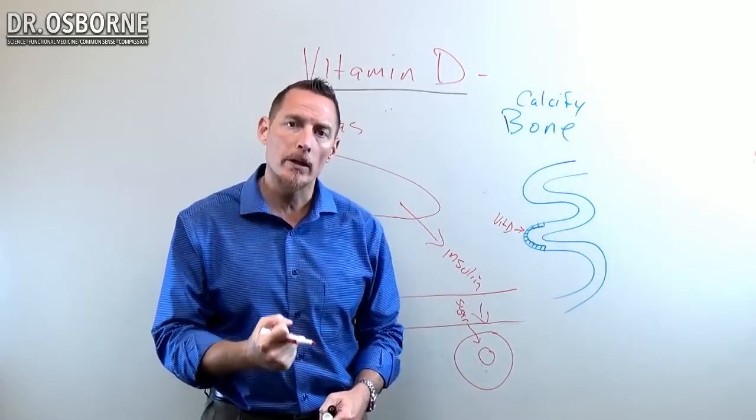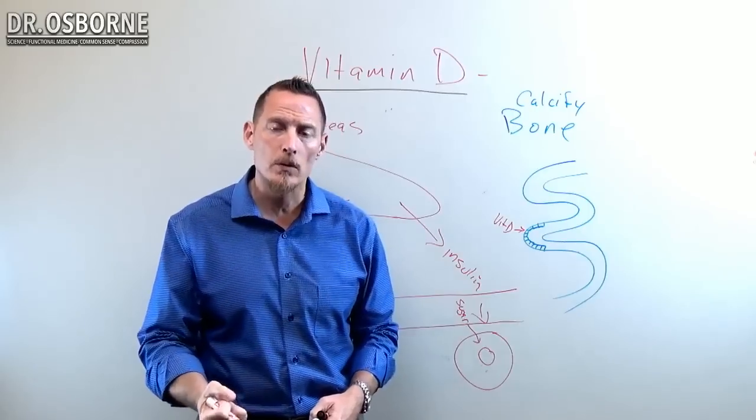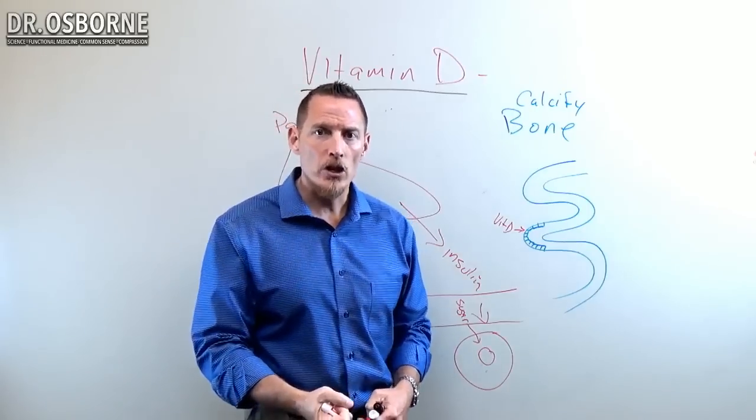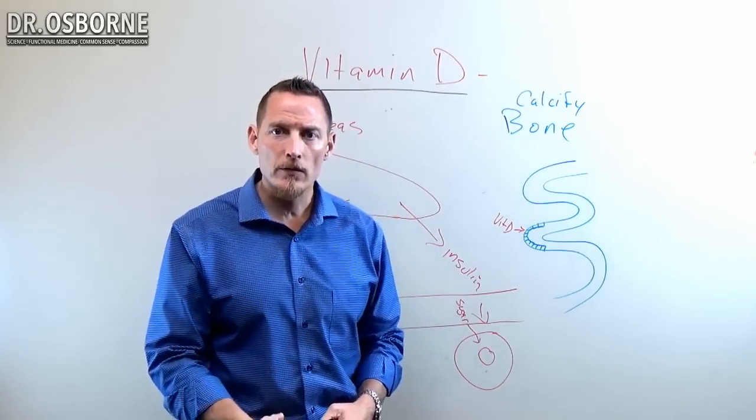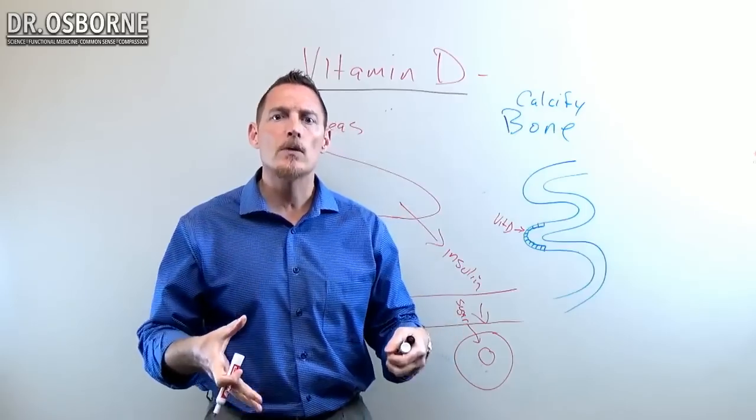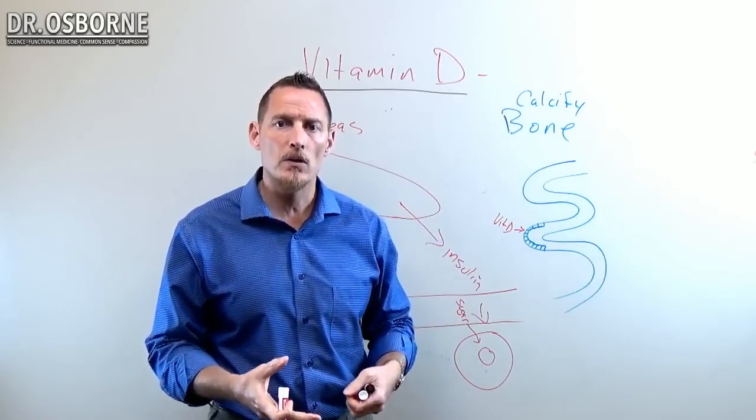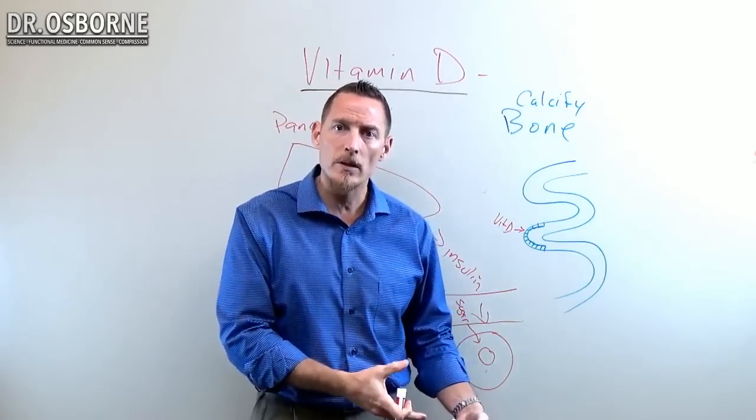This can create diseases like osteoporosis and rickets, which is a disease of children with vitamin D deficiency where their legs start to bow out. If you've ever seen somebody with bow legs, it's because as a child they had rickets, which is a vitamin D deficiency.